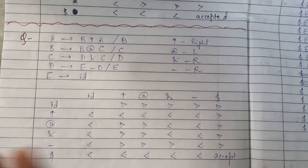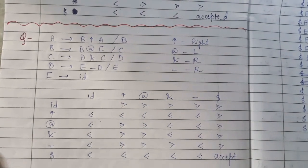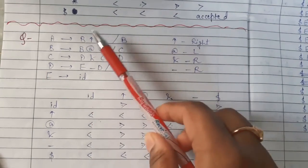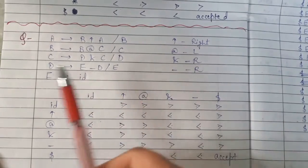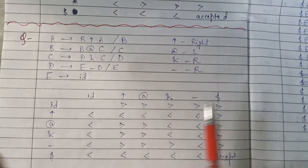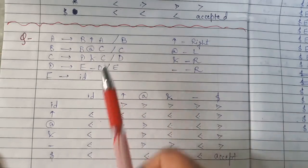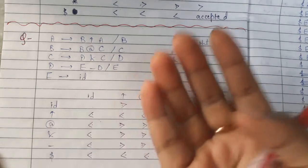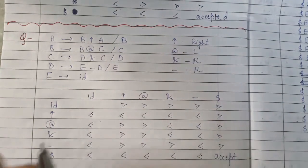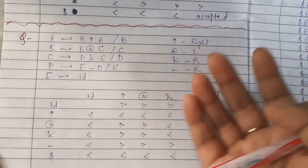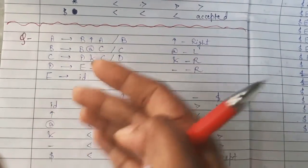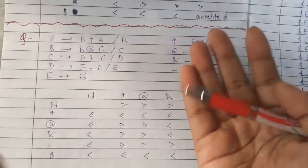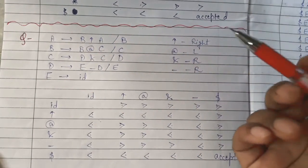First of all, this is an example grammar that is given to us. What you need to do is make the operator precedence table and, based on the grammar, make entries in it. I have already made a video on the operator precedence grammar overview — what this grammar is all about and why it is different from others — please check that video if you have not done so yet.